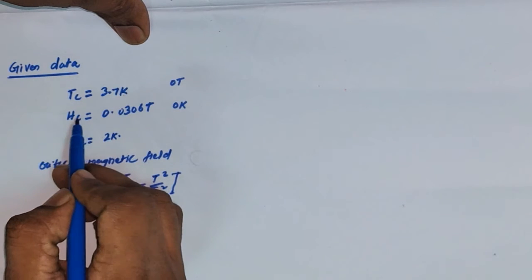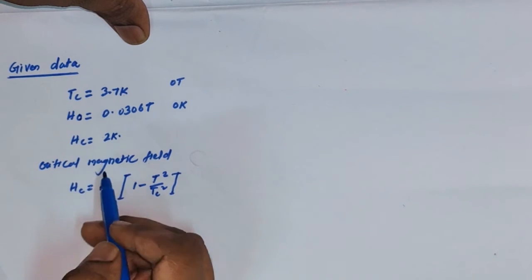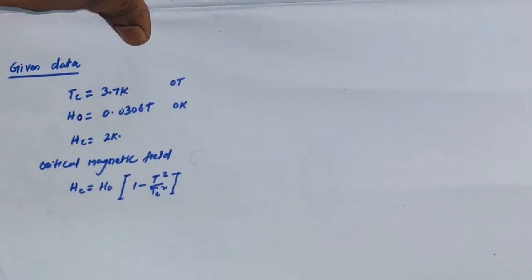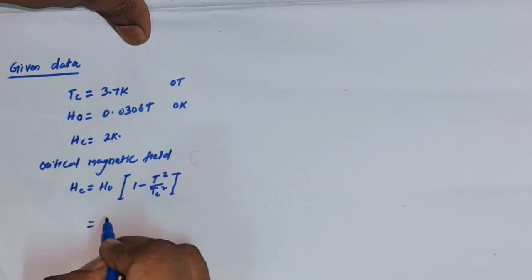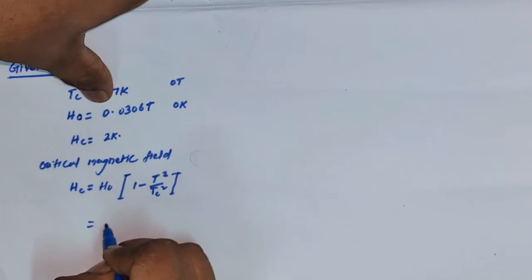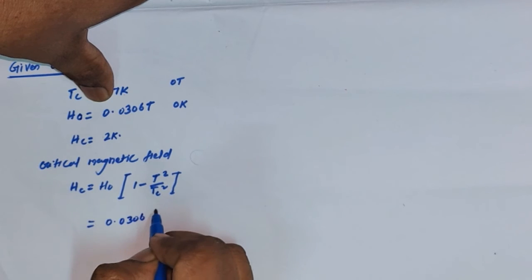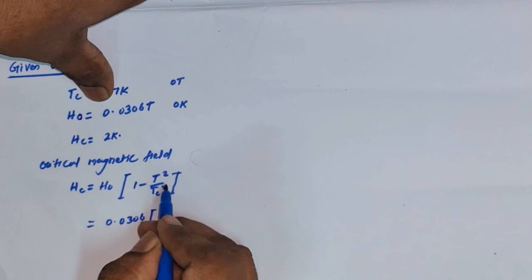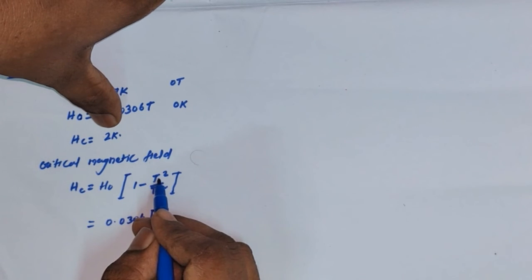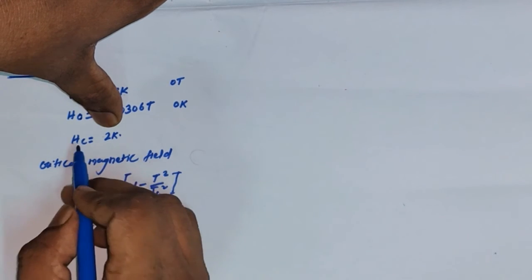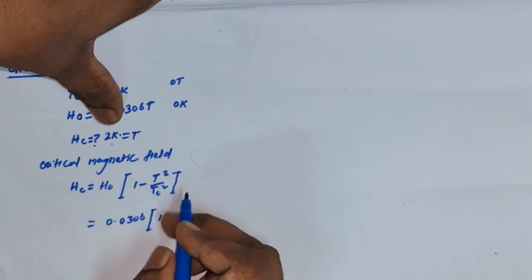So here we substitute: H_c(0) = 0.0306 tesla, multiplied by the bracket [1 − T²/Tc²], where T is the temperature equal to 2 kelvin — the critical field at T equal to 2 kelvin that we are solving for.